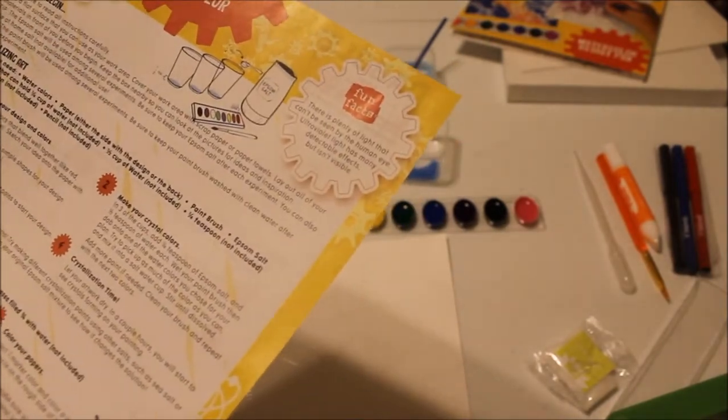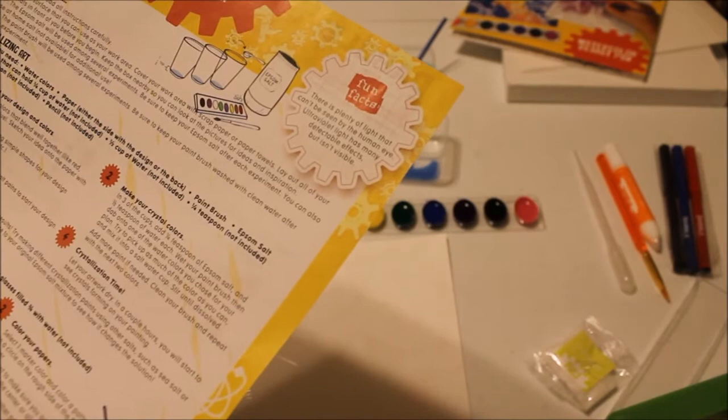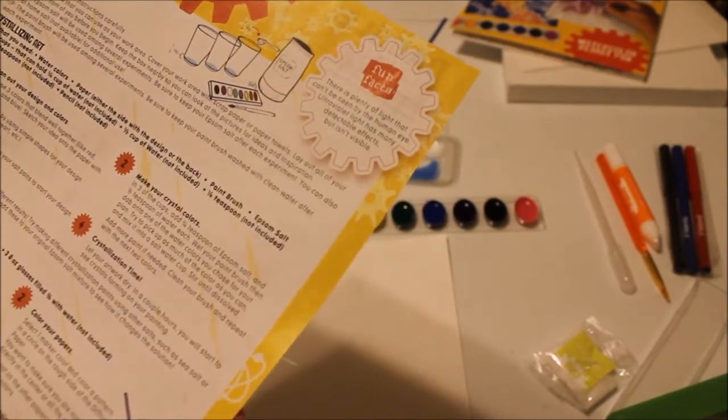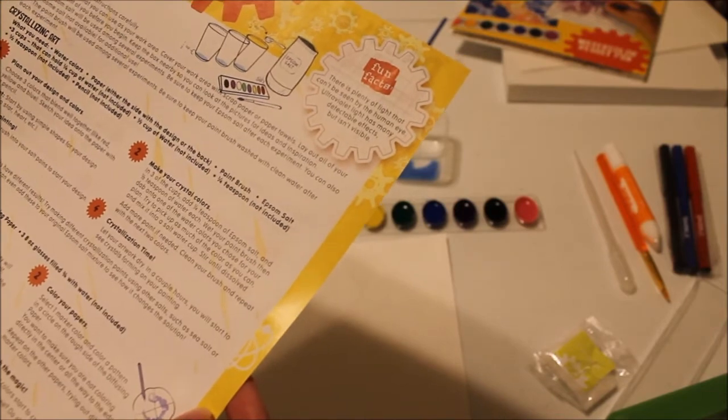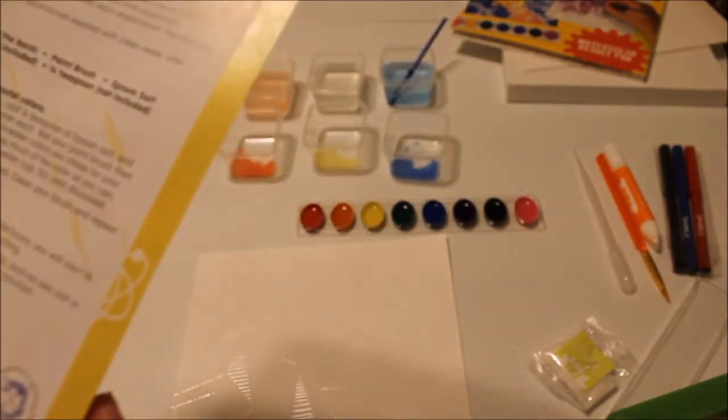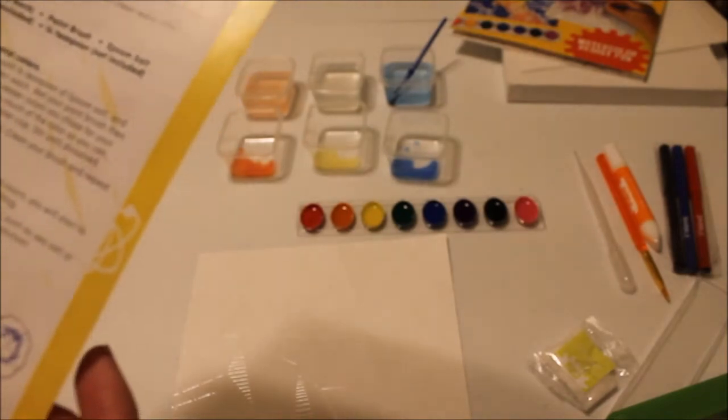Directions say to try to pick up as much of the color as you can and mix it into a salt water cup. Stir until dissolved, add more paint if needed, clean your brush and repeat with the next two colors. Step one says to choose three colors that blend well like red, yellow, and blue.